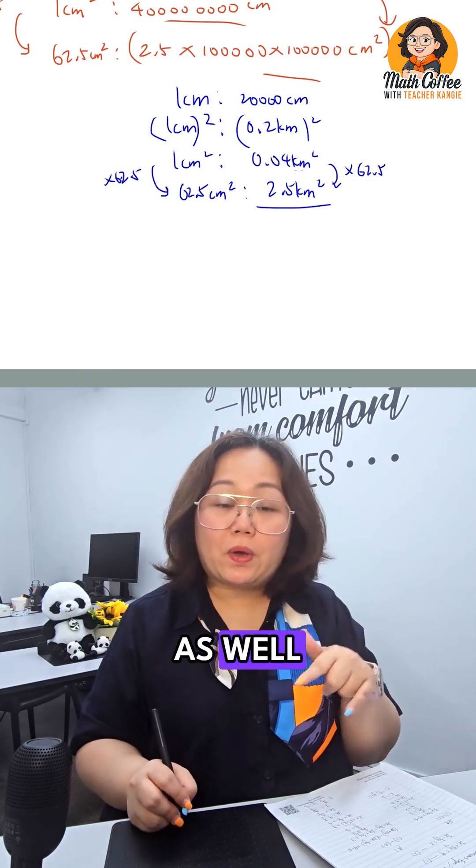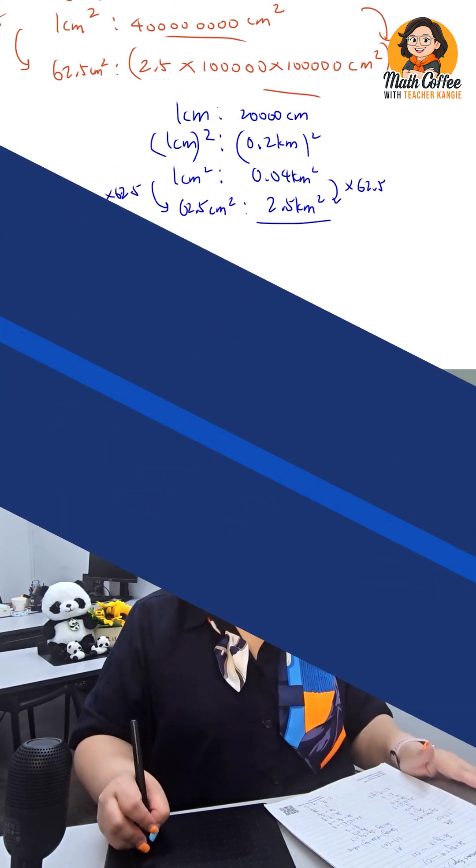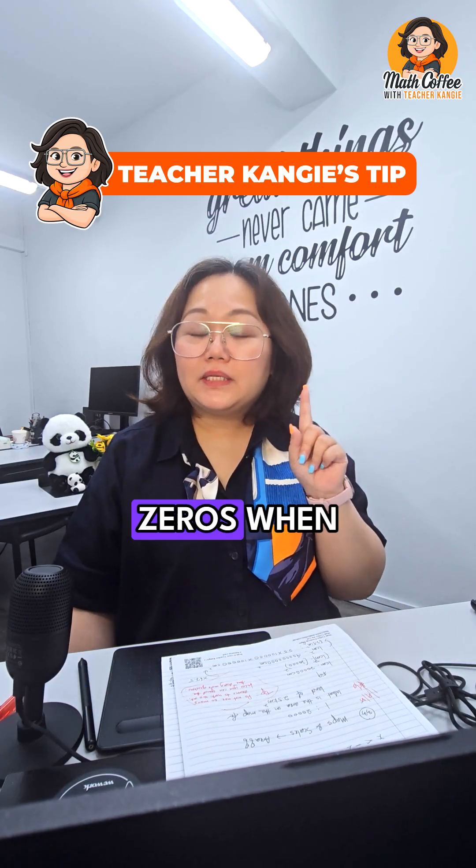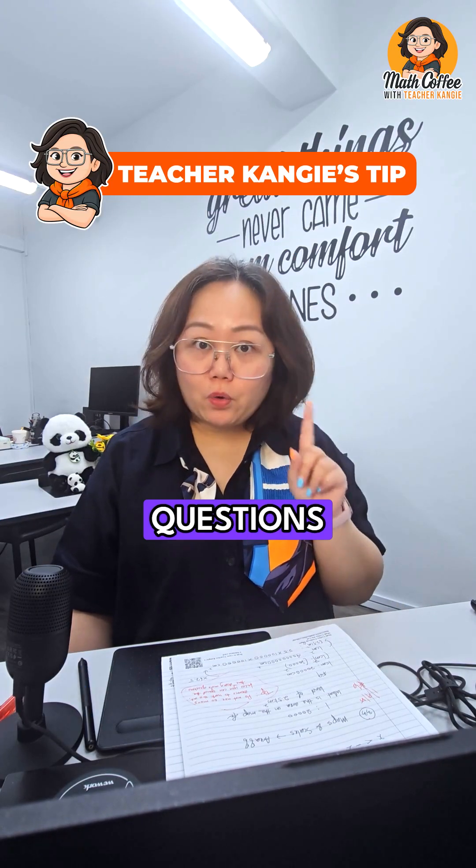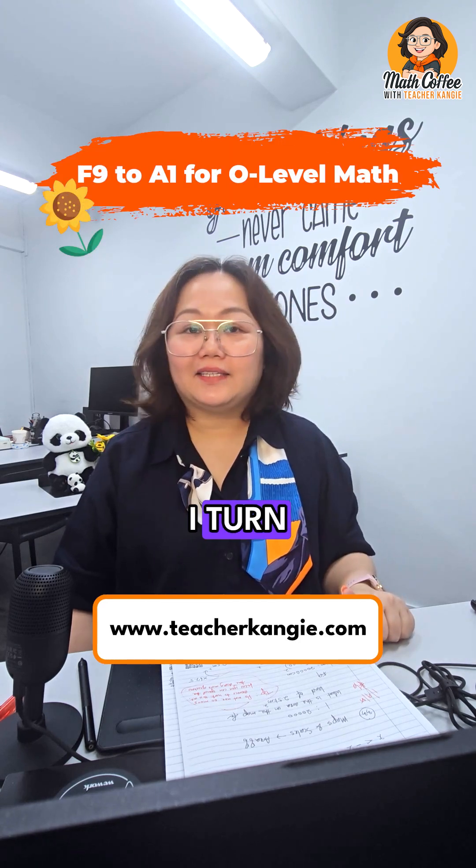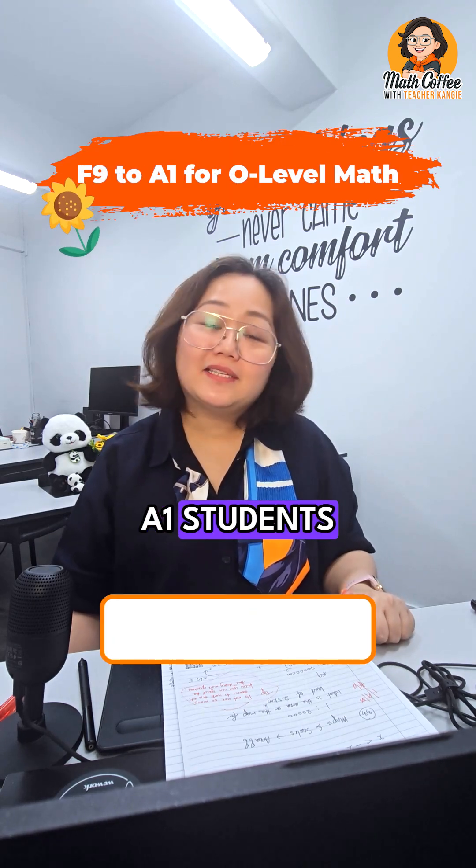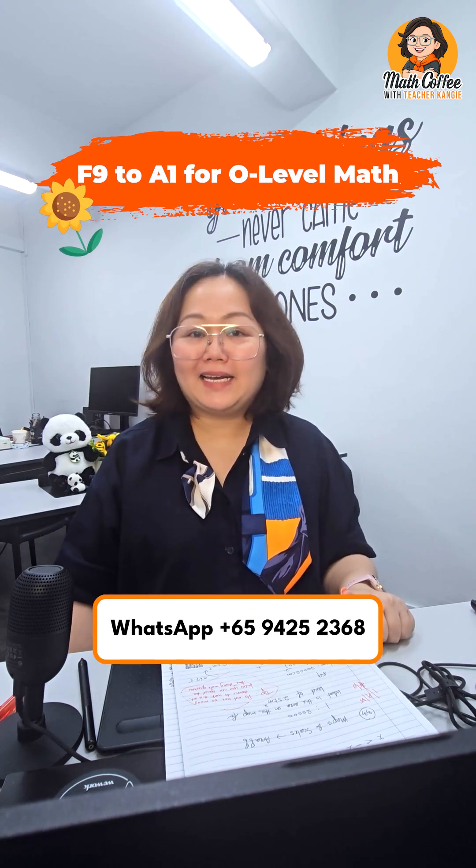This is the correct way as well as the faster way. Do not use so many zeros when you work this out. You can spend the time doing more questions. I'm Teacher Kenji. I turn F9 students into A1 students. Follow for more or join my classes.